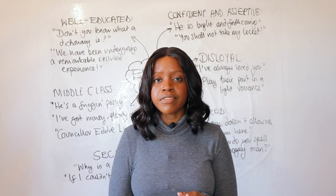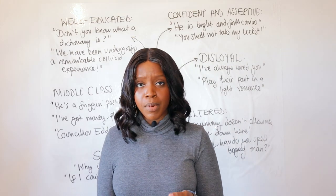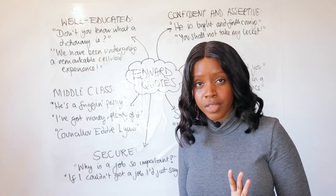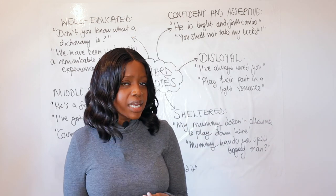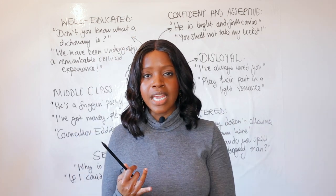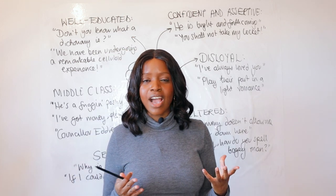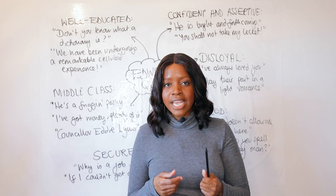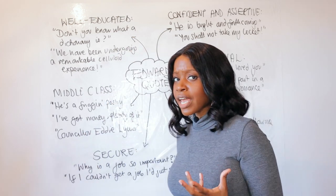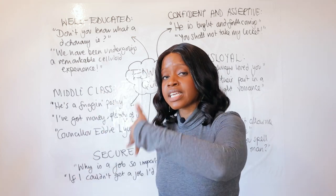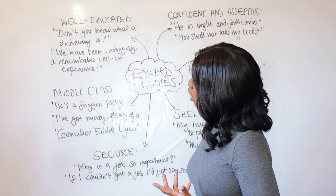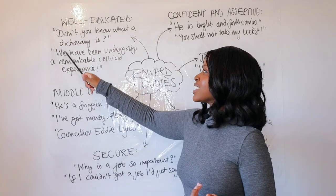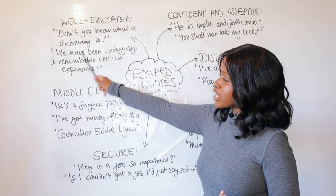The first element of Edward, which directly differs from his twin Mickey, is that Edward is incredibly well educated. Unlike Mickey, Edward is incredibly articulate — he can speak clearly even at a very young age. When he, Mickey, and Linda are hanging out, Edward is clearly much more articulate, with a wide range of vocabulary, and this foreshadows the fact that he goes on to university and gets a good job. The first quote illustrating this is when he asks Mickey, 'Don't you know what a dictionary is?'